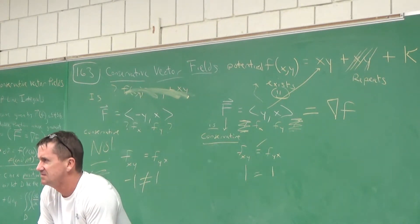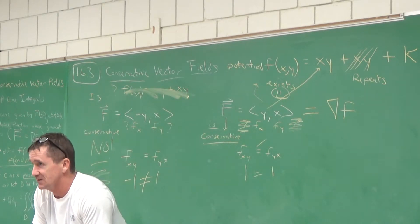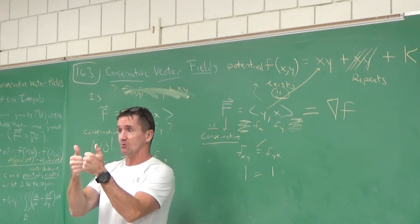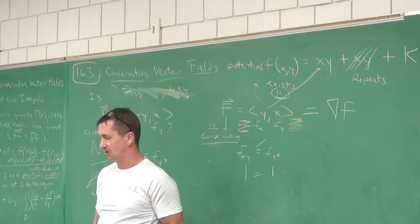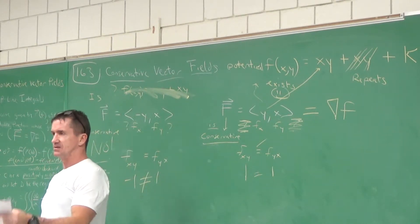That 16.2 approach wasn't that bad. But if your vector field is conservative, it's much cooler and easier. So let me give you the first problem to work through.